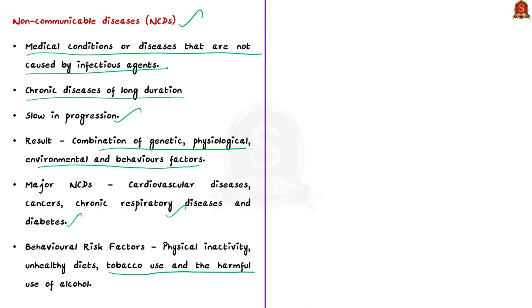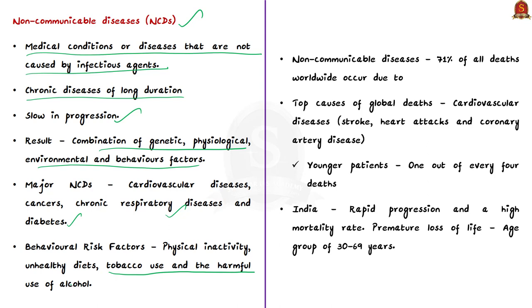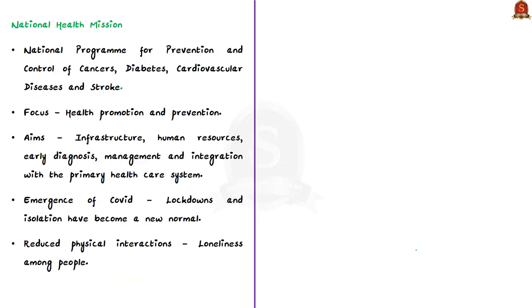Around 71% of all deaths worldwide occur due to non-communicable diseases. Cardiovascular diseases like stroke, heart attack, and coronary artery diseases are the top causes of global deaths, especially among younger patients — one out of every four deaths occurs due to cardiovascular diseases. In India, there is rapid progression of such diseases, high mortality, and premature loss of life, with the age group 30 to 69 years highly affected.